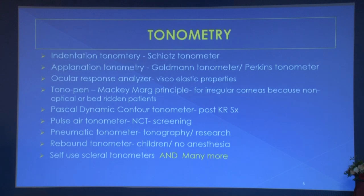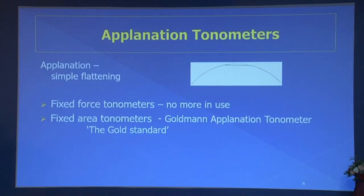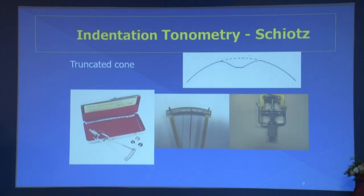Tonometry is basically indentation and applanation, though other types are now included. Many instruments are coming up with specific indications. For applanation tonometry, fixed force tonometers are no longer in use — only fixed area tonometers are used now, and the gold standard is Goldmann applanation tonometry. Indentation tonometry is problematic when scleral rigidity is very high or very low.